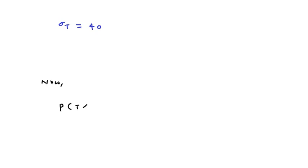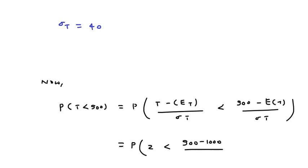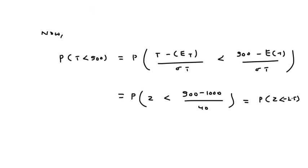Now computing P(T < 900) = P((T − E[T]) / σ_T < (900 − E[T]) / σ_T) = P(Z < (900 − 1000) / 40) = P(Z < −2.5). On further simplification, the answer is 0.006.